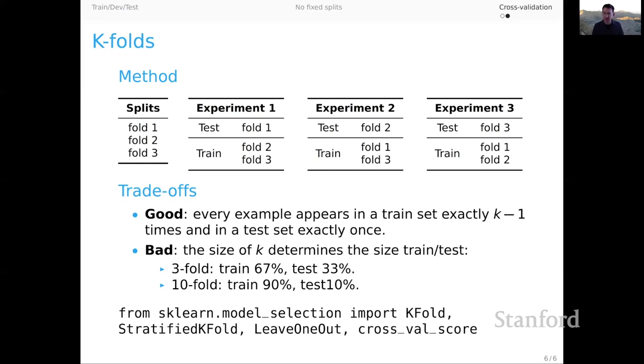And again, scikit-learn has lots of tools for this. I've actually just given a sample of them here. You have k-fold, stratified k-fold, and then cross-val score is a nice wrapper utility that will again give you flexible access to lots of different ways of conceptualizing k-fold cross-validation.